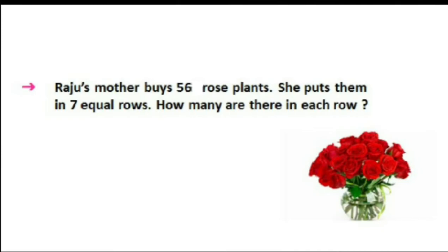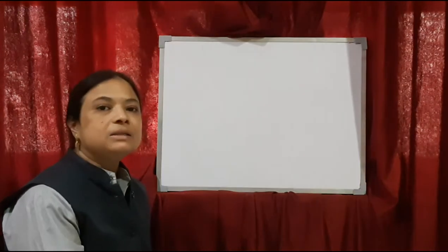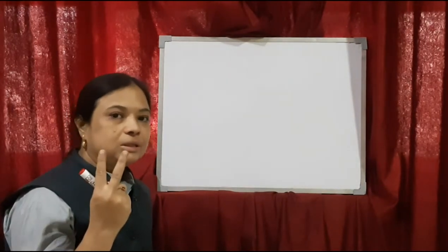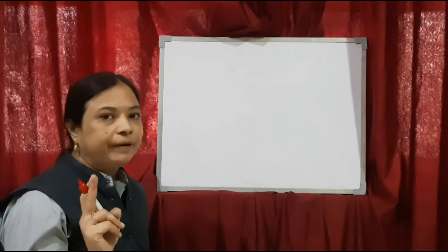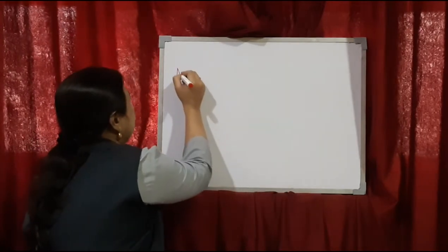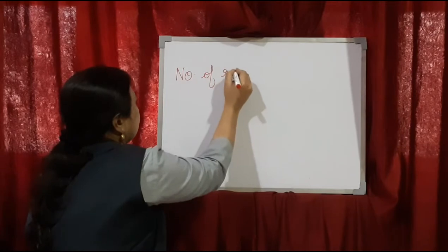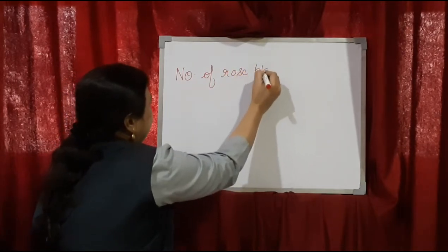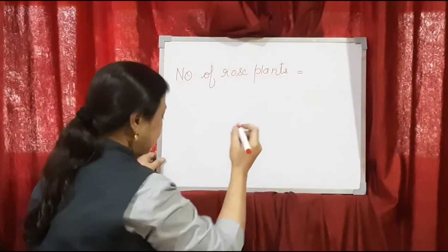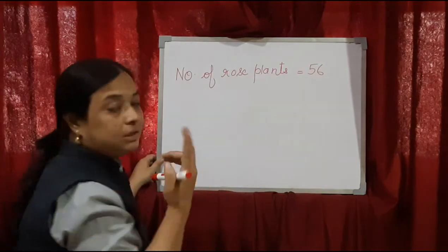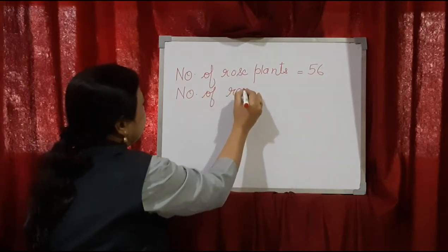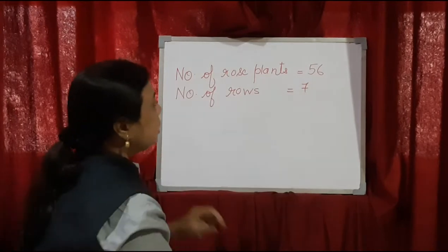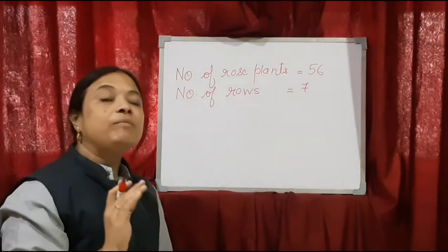Come on, let's solve. In multiplication terms also, when we were writing the statement, we were finding two things in the question and then writing the statement. In division terms also we will do the same — two things we are going to find out and then make the statement. So what we are going to write: number of rose plants — how many are there? In your textbook you will see it is 56. And the other thing given: number of rows.